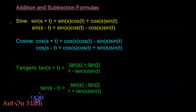They are as follows. For sine: sine of s plus t is sine s cosine t plus cosine s sine t. Sine of s minus t is sine s cosine t minus cosine s sine t. Cosine of s plus t is cosine s cosine t minus sine s sine t. Cosine of s minus t is cosine s cosine t plus sine s sine t. For tangent: tangent of s plus t is tangent s plus tangent t over one minus tangent s tangent t. And tangent of s minus t is tangent s minus tangent t over one plus tangent s tangent t.